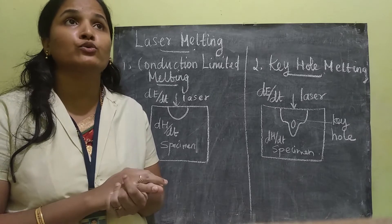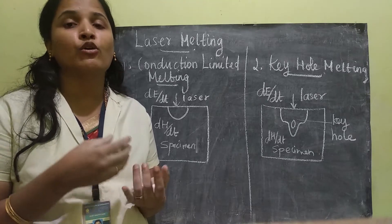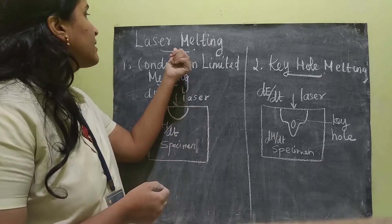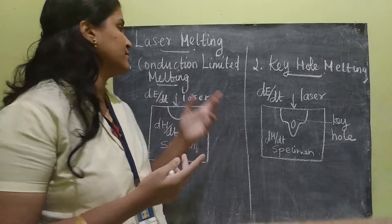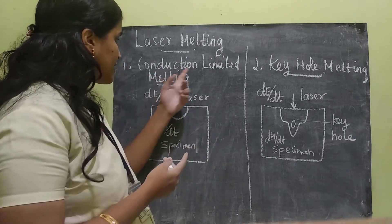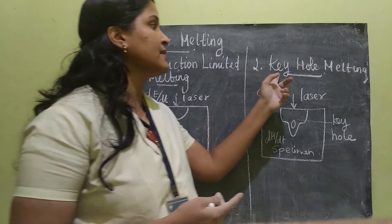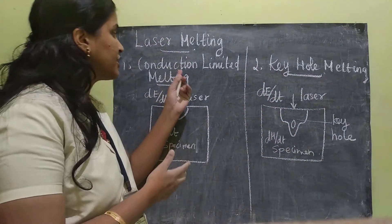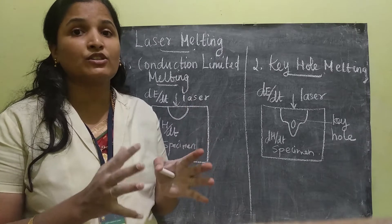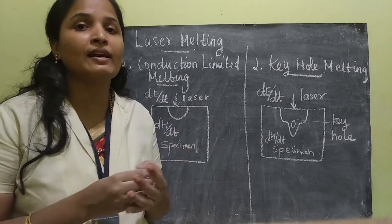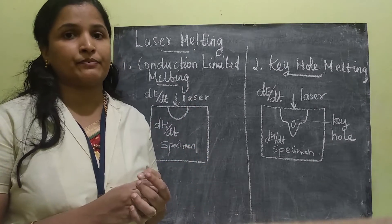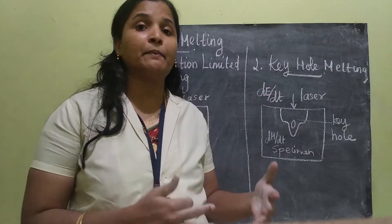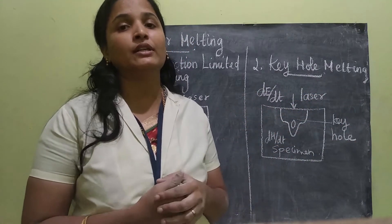This is used in laser welding or laser cutting process. So laser welding is of two types. One is conduction limited melting, another one is keyhole melting. Conduction limited melting is otherwise called as low power laser melting, and keyhole melting is otherwise called as deep penetration melting.